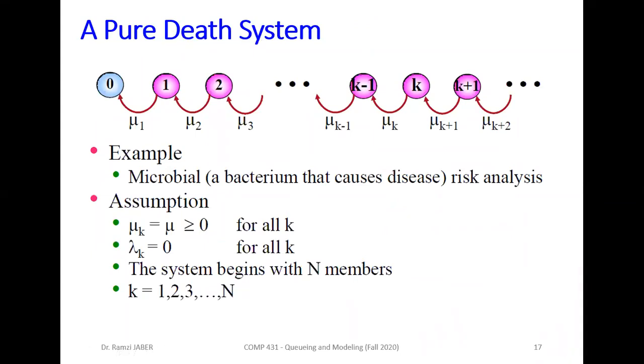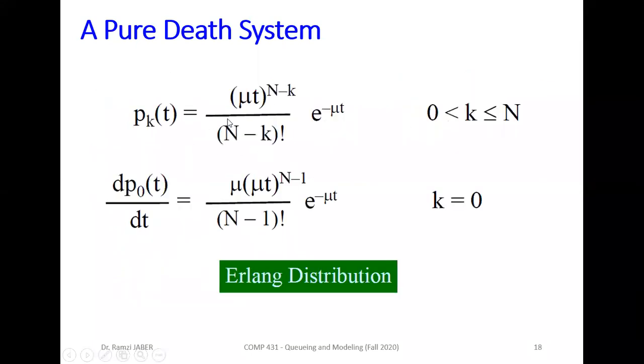The inverse will be a pure death system. A pure death system has only mu's, not lambda's. Example: in microbiology, bacteria that causes disease, in risk analysis when we kill the bacteria in the body, they die one by one. We assume lambda_k equals zero, mu_1 equals mu_2 equals mu_3 equals mu, all equal to mu positive. So the system begins with n number members from 1 to n. By some calculation we get this equation called Erlang distribution. We'll not use this in queuing system, we'll use only Poisson distribution.